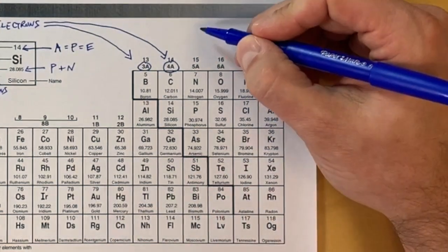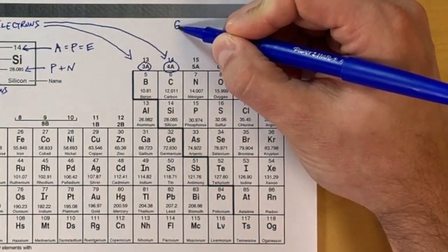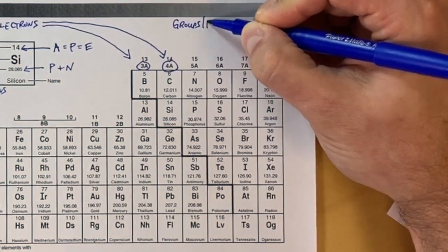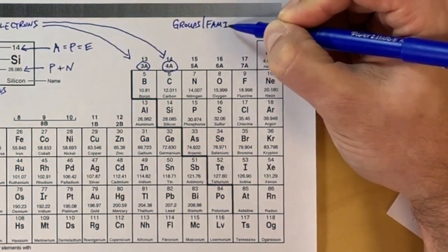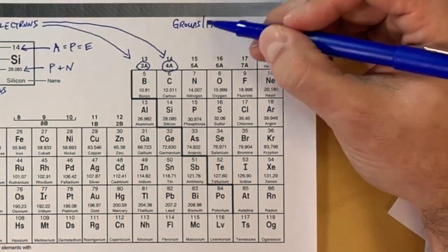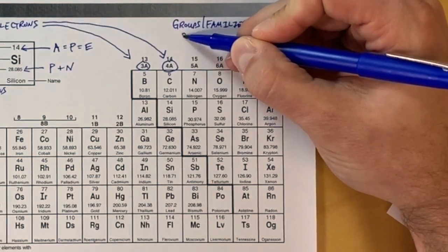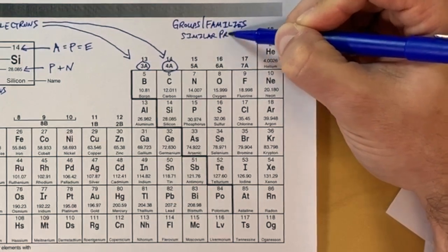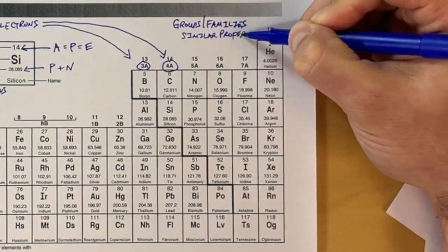We're going to move over to this blank space and talk about groups and families. Groups and families are all the elements within the same column. A column goes up and down throughout the periodic table. Groups and families and the elements within them all have similar properties, meaning they have similar characteristics.